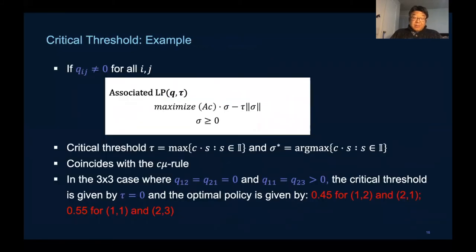But that is otherwise not always true. Going back to the three by three example, when q(1,2) and q(2,1) are zero and q(1,1) and q(2,3) are positive, the critical threshold is actually zero and the optimal policy is highlighted in red, which is definitely different from C-mu.